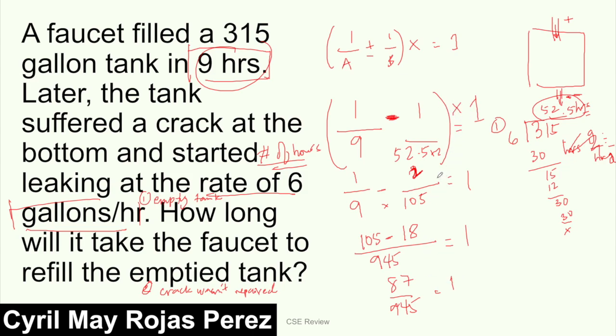To get our X, which carries over there, we isolate it. To leave X on one side, we multiply by the reciprocal, 945/87. I already solved this in our work and pipe problems videos. If you're still confused, watch that first. Cancel this out. X equals 945 divided by 87.